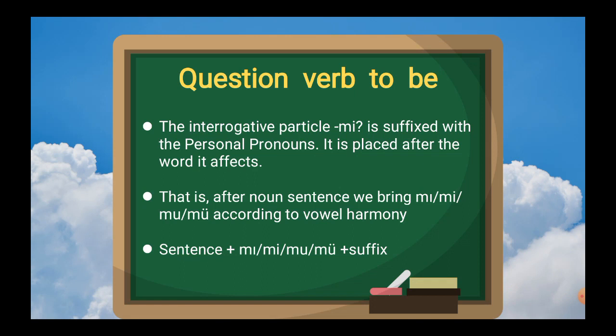In order to make question verb to be in Turkish, we bring mı, mi, mu, or mü at the end of the noun sentence. How we decide to bring mı, mi, mu, or mü? We decide according to Turkish vowel harmony. If you want to know Turkish vowel harmony, you can watch my Turkish vowel harmony video.